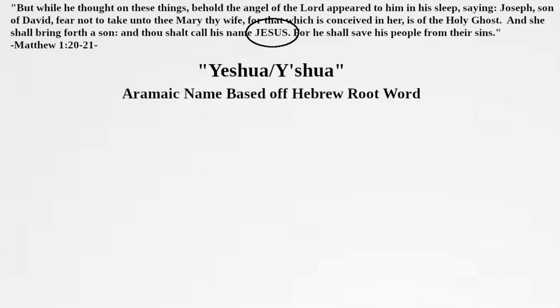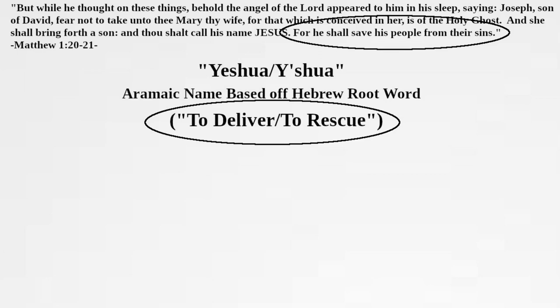The name itself, of course, is translated to the modern version in this Bible passage. When Jesus was still visible on earth, however, he was called Yeshua. This makes sense because Yeshua is an Aramaic name based off of a Hebrew root word meaning to deliver or to rescue. It's sensible that a name like that would be chosen for someone who would deliver people from their sins.